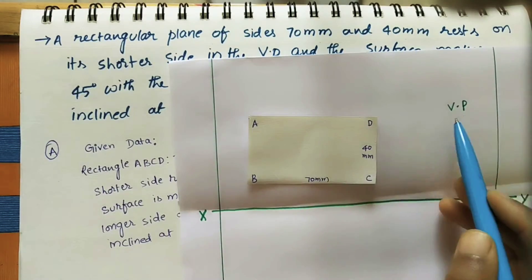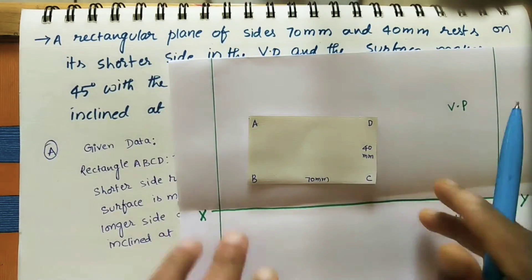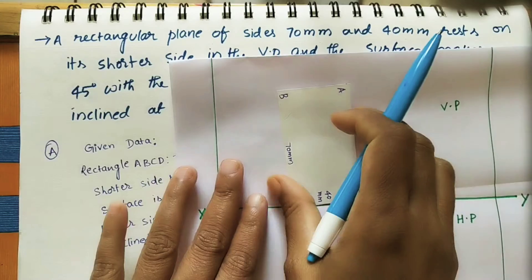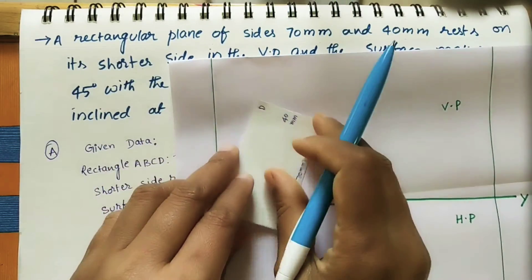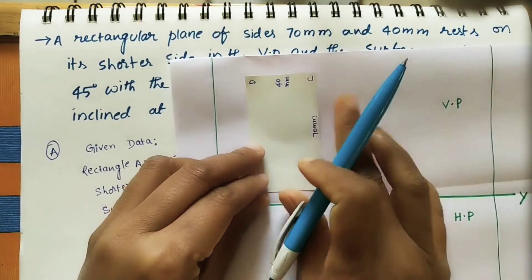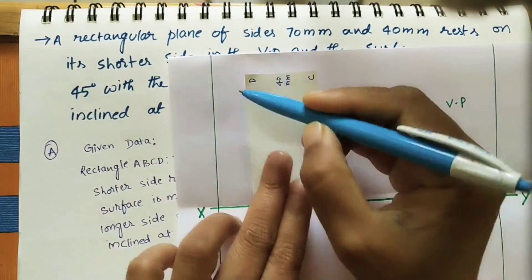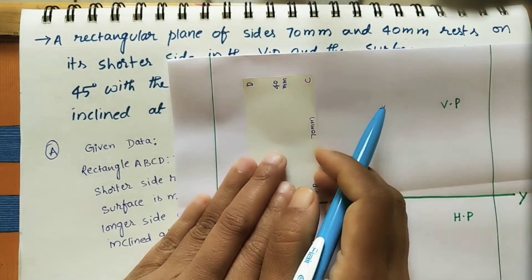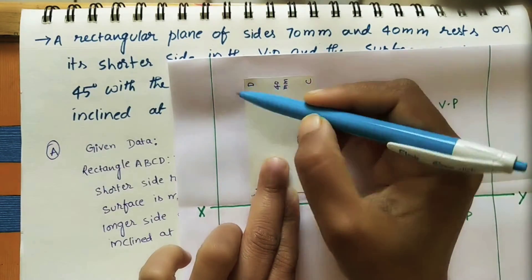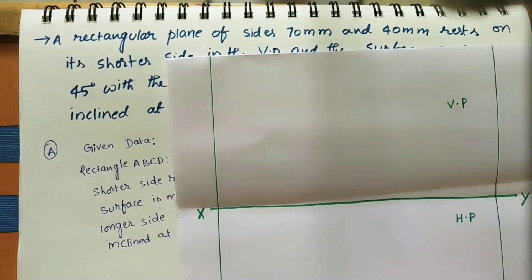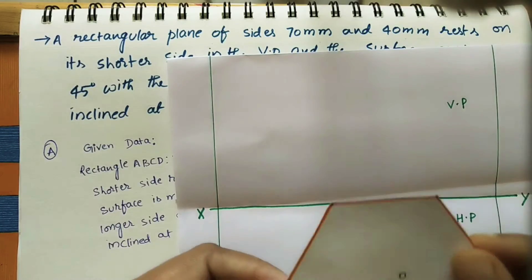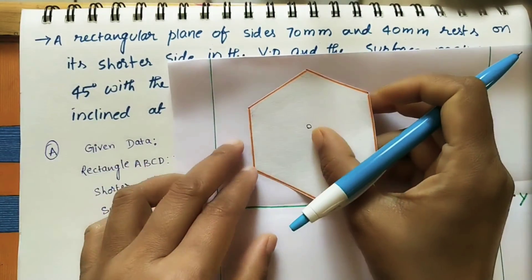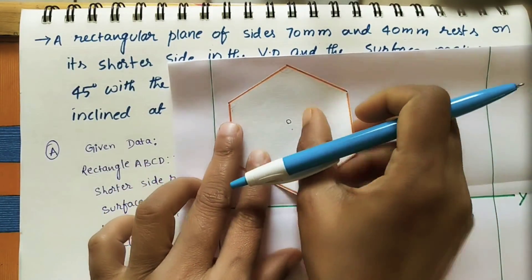We start the rectangular plane from the shorter side because the shorter side is given as being in the vertical plane. For example, if the longer side were in the VP, you would start with the longer side. Similarly, for a hexagonal plane with one edge in the VP, you place the entire hexagon in the VP starting from that edge.